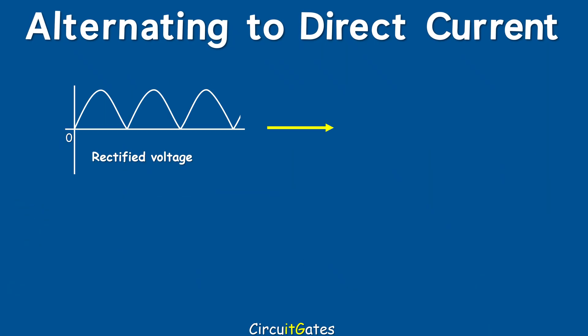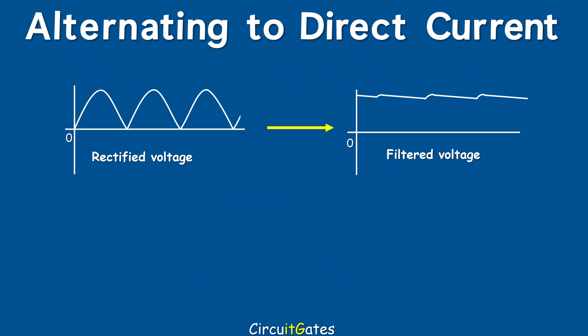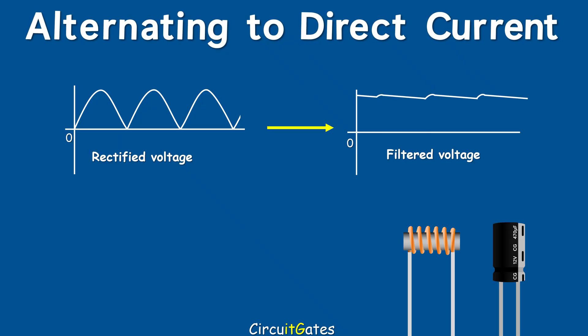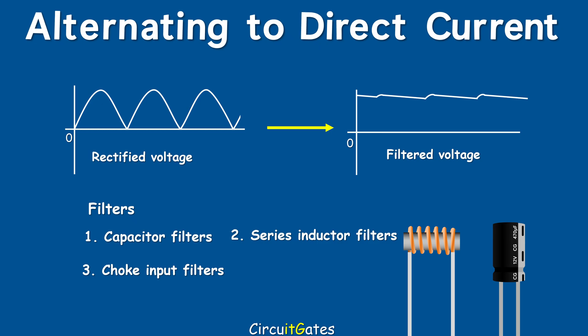After rectifying the voltage, you then filter it. At filtering, we are eliminating the fluctuations in the DC rectified voltage to a nearly smooth voltage. Capacitors and inductors are used at filtering. There are several filters used, such as capacitor filters, series inductor filters, choke input filters, and capacitor input filters.